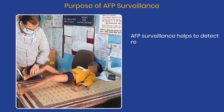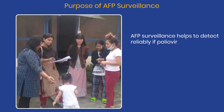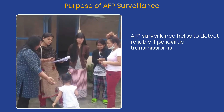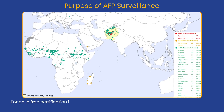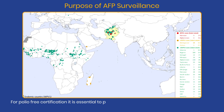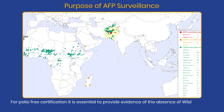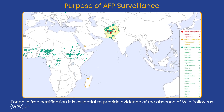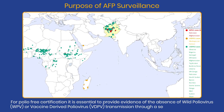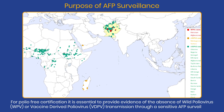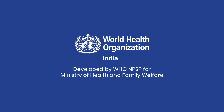Now let us look at the purpose of AFP surveillance. AFP surveillance helps to detect reliably if polio virus transmission is occurring. For polio-free certification, it is essential to provide evidence of the absence of WPV or VDPV transmission through a sensitive AFP surveillance. AFP surveillance will continue until global polio-free certification is achieved.